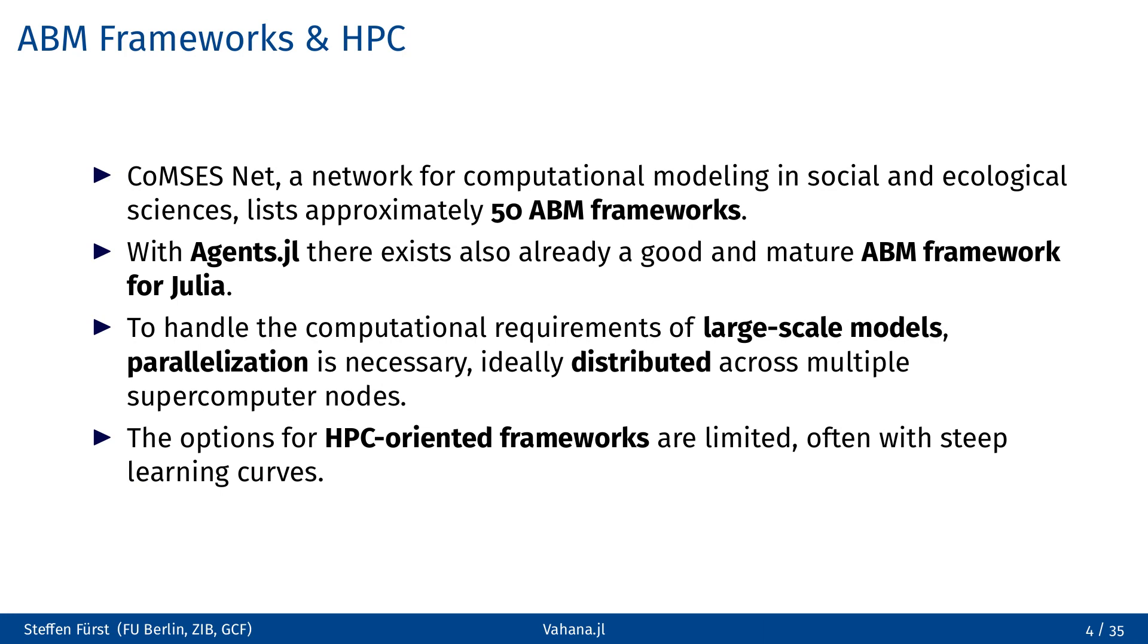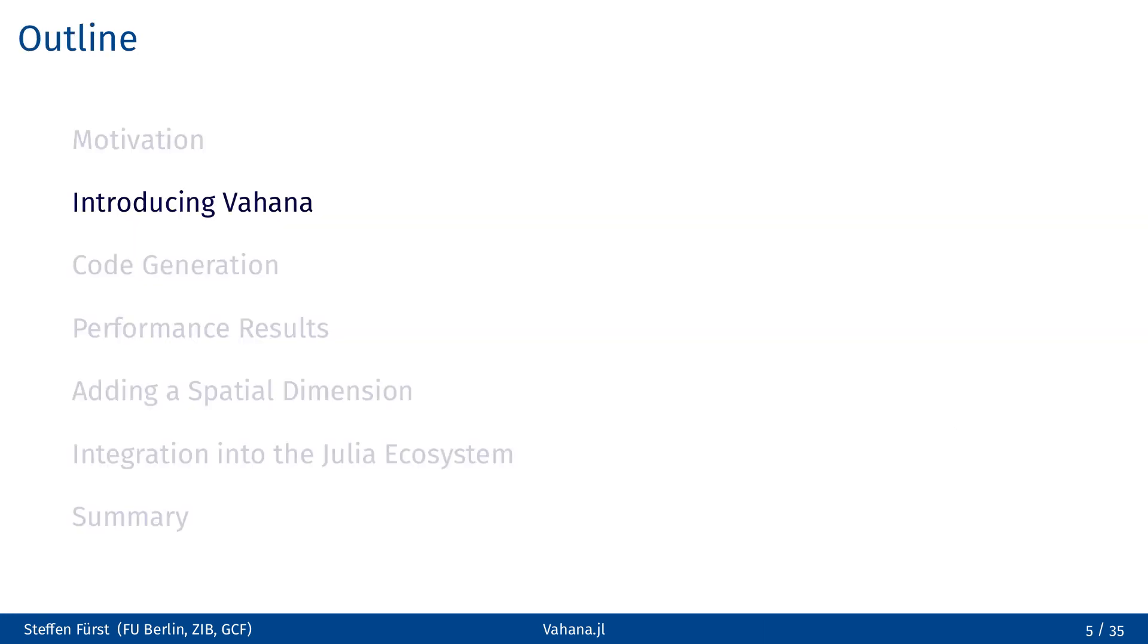Unfortunately, only a few of these frameworks support parallelization. They often come with a steep learning curve and a limited set of features, especially when it comes to the support of complex networks. Therefore, during a project we have done a few years ago, we recognized the need of a new HPC-capable ABM framework. This led to the conception of the framework that we now call Vahana. Over the last year and a half, I have been working intensively on the implementation.